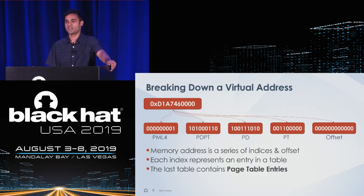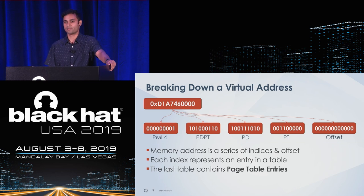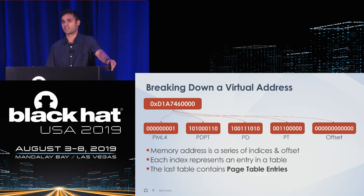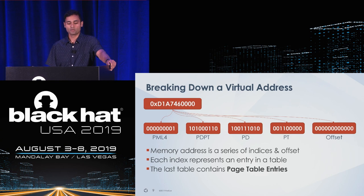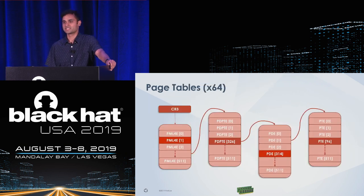Let's say omar.exe has requested one megabyte of memory from the kernel. The kernel responds with an address like hex D1A746 followed by zeros. That address can be broken out into a series of 9-bit indices followed by a 12-bit offset. Each of those indices gets plugged into what we call page tables. By navigating through the page tables, we ultimately arrive at page table entries — 64-bit data structures that let the memory manager know where to find the page.